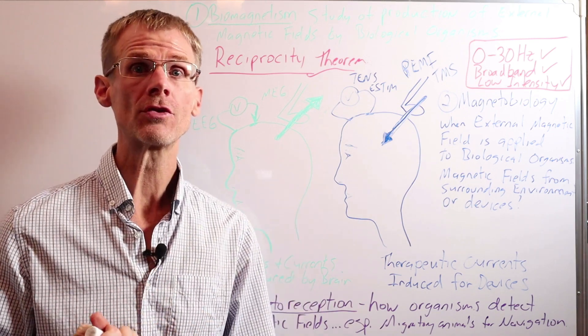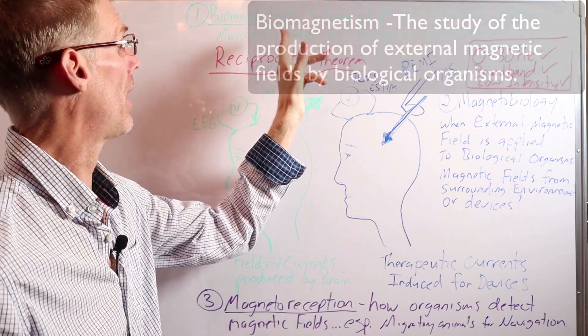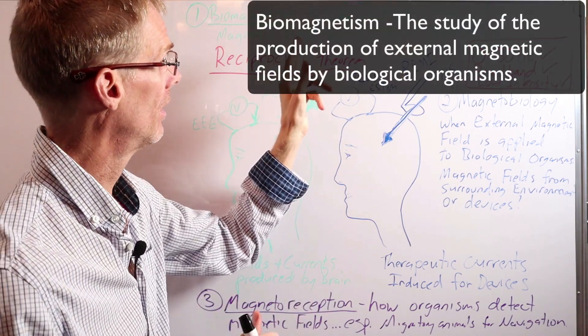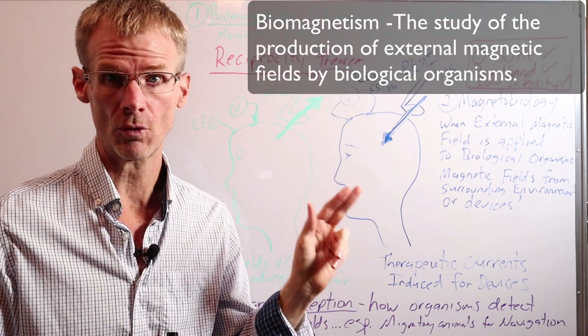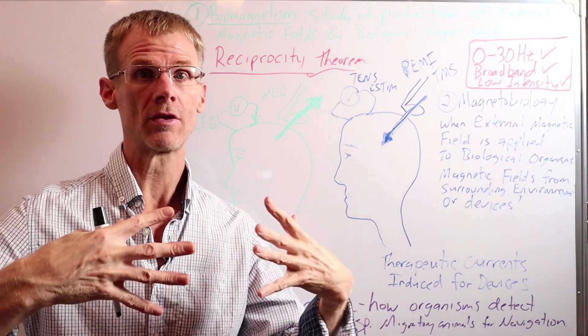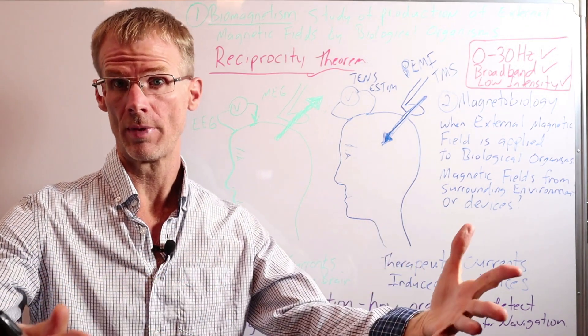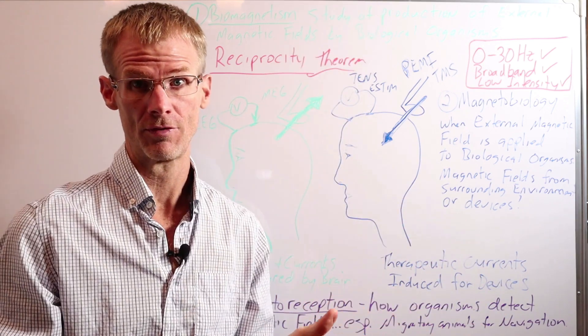So let's now take a closer look at biomagnetism. And here's the definition. Simply, biomagnetism is the study of the production of external magnetic fields by biological organisms. That is to say, like we mentioned, it's measuring the magnetic fields that living organisms like the human body emits going out, the energy going out, like we said, even to infinity.